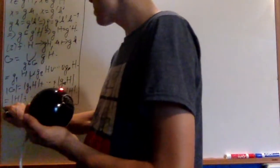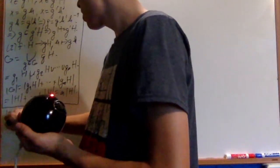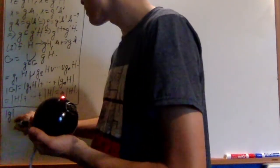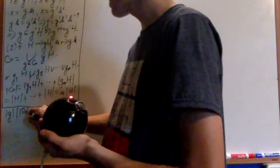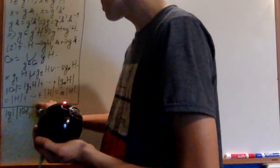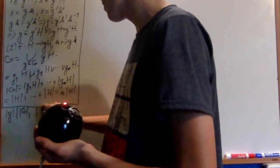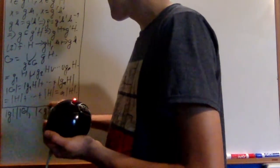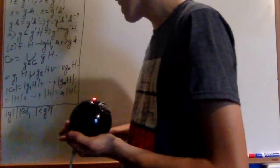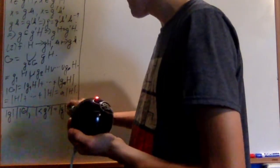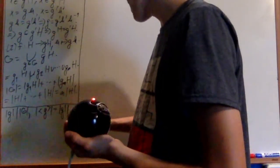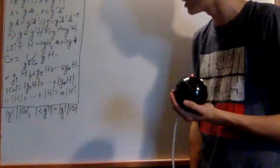A quick corollary is that the order of some element of the group has to divide the order of the group. The reason is that the order of the cyclic group generated by that element, which is just the order of that element, has to divide the order of G by this theorem.